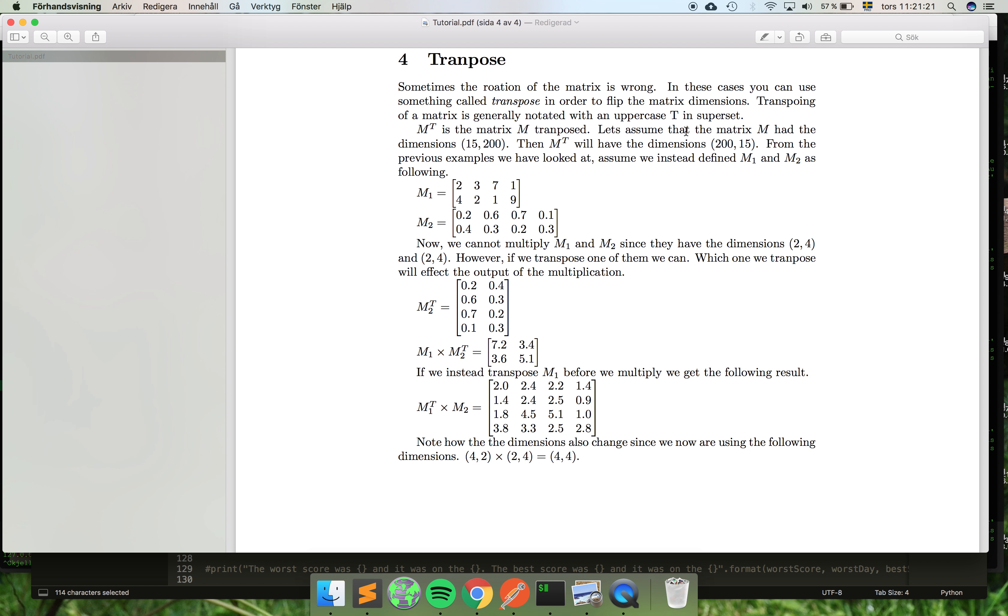And let's say that you have some matrix that has these dimensions, so 15 rows and 200 columns. The M transpose of this matrix would flip the dimensions around, so now you would have 200 rows and 15 columns instead. So you just flip them around.